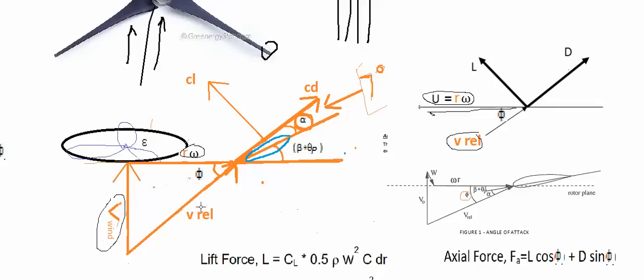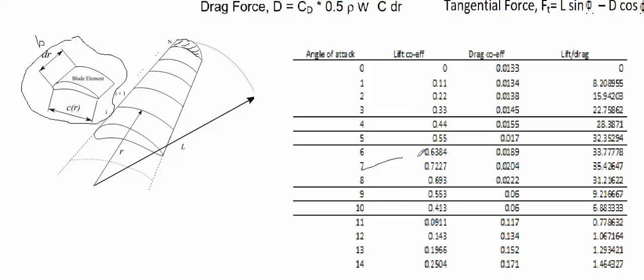Intuitively, the relative velocity vector changes both direction and magnitude as the individual velocity vectors change. So the angle phi is a function of wind velocity and linear velocity magnitudes. As phi changes, we must adjust our pitch angle to keep the angle of attack alpha at seven degrees, because at seven degrees we get the best possible lift-to-drag coefficient.